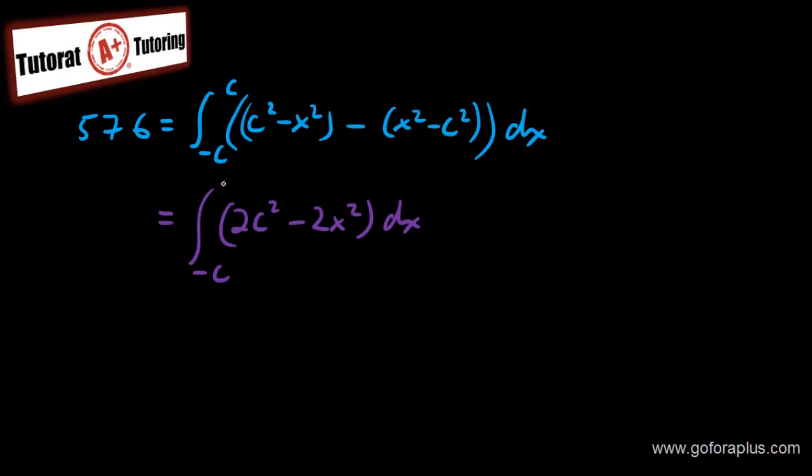So I have 576 equals to integral from minus c to c, c squared minus x squared, subtract x squared minus c squared. So this is what I have here. Simplifying this integral, c squared minus minus c squared. So I have 2c squared. So this is 2c squared minus 2x squared integral of this. It will be from minus c to c. And if you do the integral here now, this is going to give you 2c squared x, because it's in terms of x. This whole thing is constant. And then I have minus 2x cubed over 3. And this whole thing is from minus c to c.